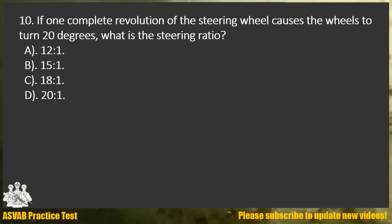Question 10. If one complete revolution of the steering wheel causes the wheels to turn 20 degrees, what is the steering ratio? A. 12 to 1. B. 15 to 1. C. 18 to 1. D. 20 to 1.